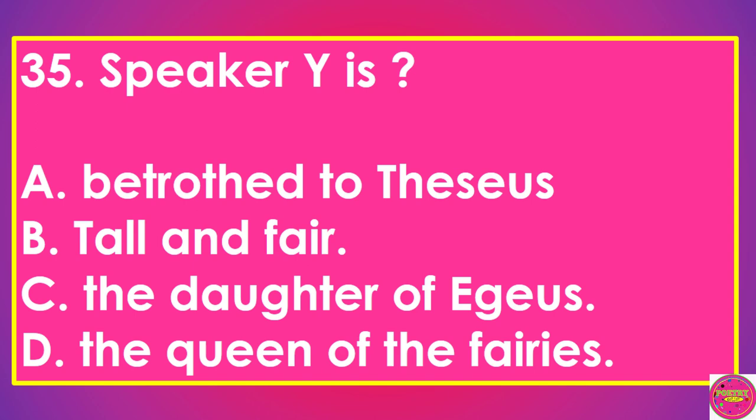Question 35: Speaker Y is: A. Betrothed to Theseus, B. Tall and fair, C. The daughter of Egeus, D. The Queen of the fairies. The correct answer to this question is A. Betrothed to Theseus.